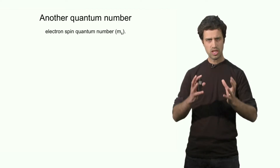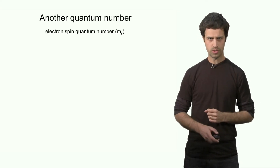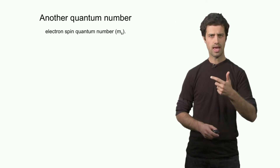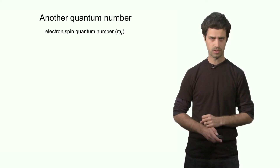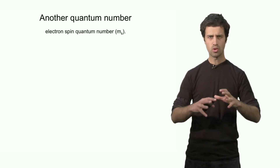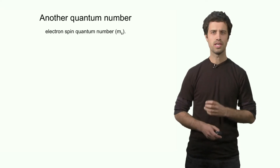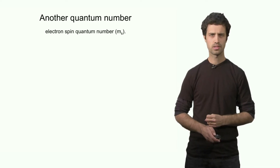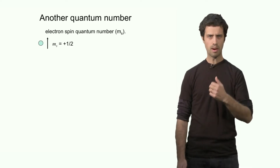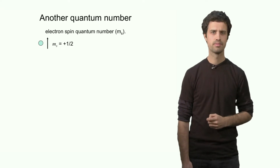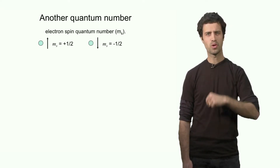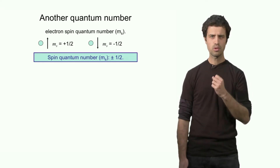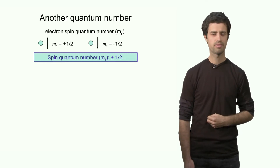So far we have talked about the shape and energy of the orbital. The orbital is described by a wave function with 3 quantum numbers: n, l, and ml. However, there is a 4th quantum number — one that has nothing to do with the orbital itself, but has everything to do with the intrinsic properties of the electron. The electron has two states called spin states. One is spin up, with quantum number value plus one-half, and one is spin down, with value minus one-half. So the spin quantum number can only have two values: plus half and minus half.